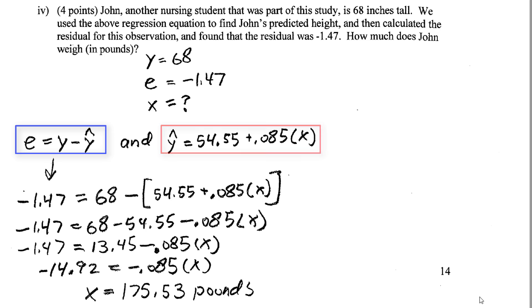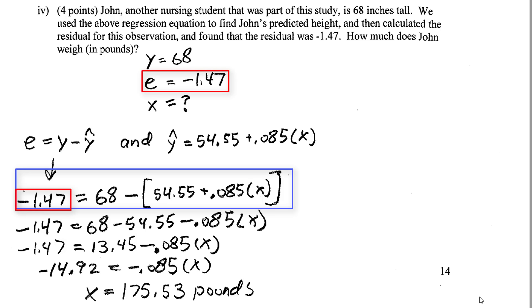Now we substitute into the equation: residual equals actual minus predicted. The residual is -1.47, which equals 68 (his actual height) minus the predicted. The last part is the formula for predicted height.